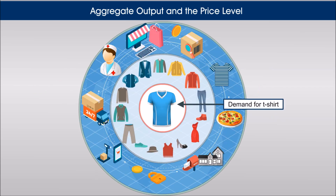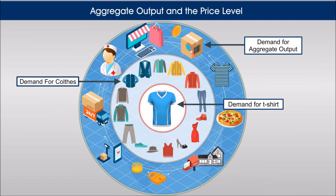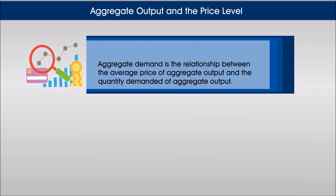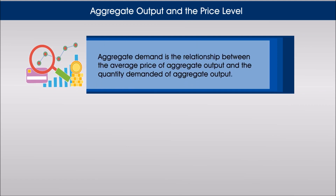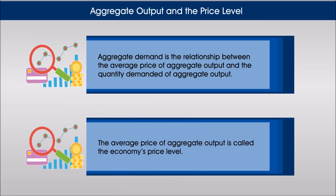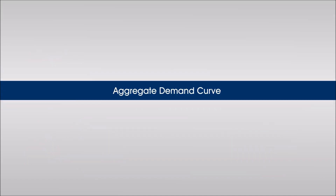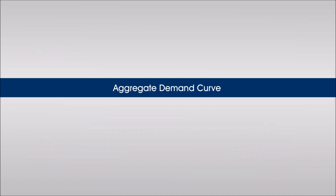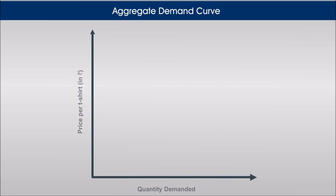Just as we can talk about the demand for a t-shirt or the demand for clothes, we can talk about the demand for aggregate output. Aggregate demand is the relationship between the average price of aggregate output and the quantity demanded of aggregate output. The average price of aggregate output is called the economy's price level.